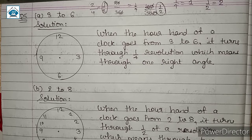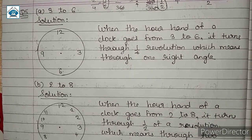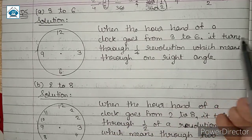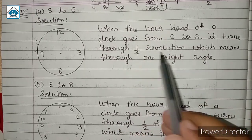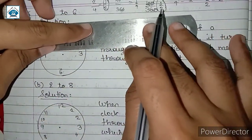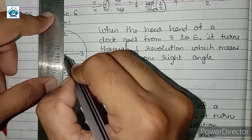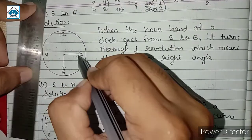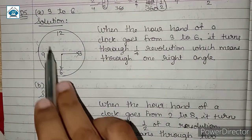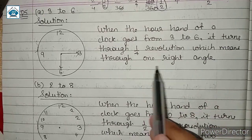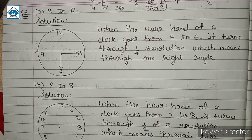The logic behind this is what I was explaining. This was just for your understanding; you don't need to write it. When the hour hand of a clock goes from 3 to 6, it turns through 1/4 of a revolution. It covers one part out of four parts, so 1/4 of a revolution means 1 right angle.